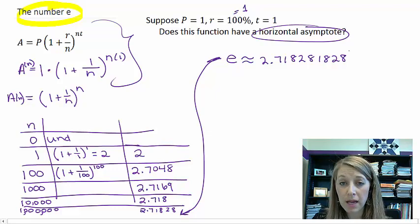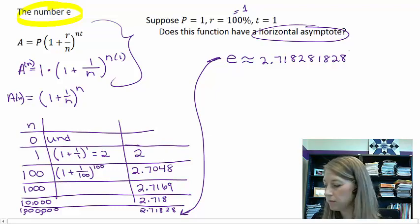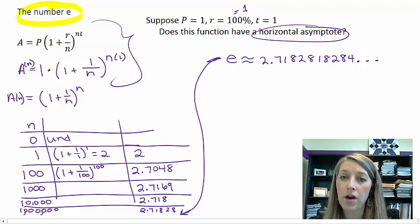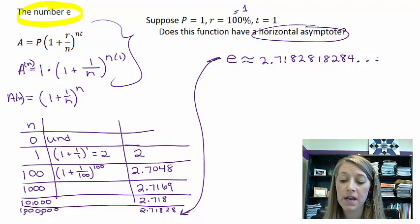So the approximate value for e is 2.718281828. Now, it might look like it's repeating, but it actually does not repeat. The next number is 4, and then it goes on and on forever. So this number never stops and it never repeats. It never terminates. So this is considered to be an irrational number.